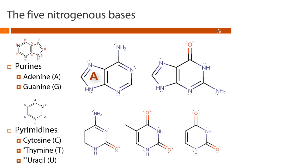Adenine (one-letter code A) and guanine (one-letter code G) are our purines. A helpful mnemonic from Texas: 'AGs are pure.' That leaves cytosine (C), thymine (T), and uracil (U) — these are our pyrimidines, all based on a six-membered ring structure. Conveniently, the one-letter code for all five bases is just the first letter of their name.